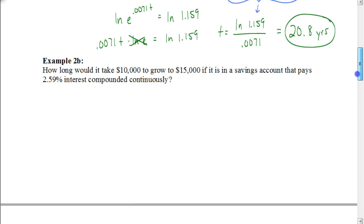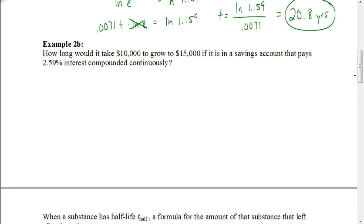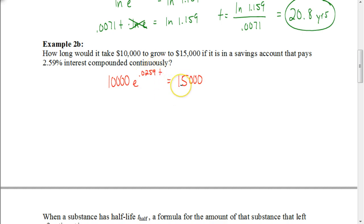Try this next one on your own. Figure out how long it would take $10,000 to grow to $15,000 in a savings account that pays 2.59% interest compounding continuously. Pause the video and hit play when you're ready to check your answer. You should have set it up in PERT form: your principal is $10,000 times E. Your rate — 2.59% changed to a decimal — is 0.0259 times your time. The total is $15,000. To get the base E by itself, divide both sides by 10,000 to get 1.5 on the right side.